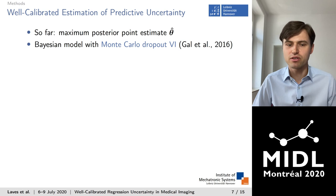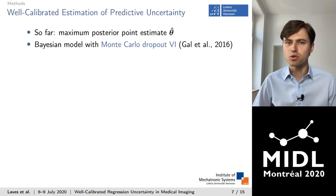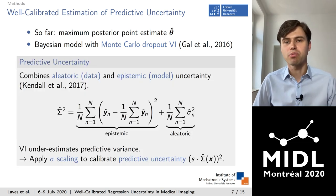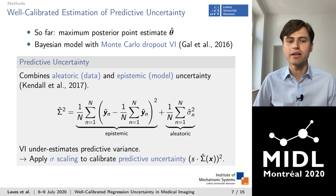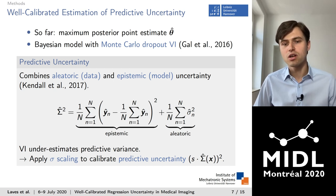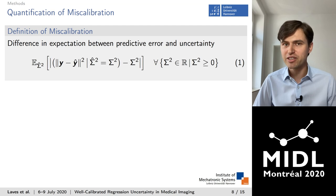So far we have assumed a maximum posterior point estimate for the parameters θ, which does not consider the epistemic uncertainty. We therefore extend the neural net into a fully Bayesian model under the variational inference framework with Monte Carlo dropout. In Monte Carlo dropout, the model is trained with dropout and dropout is applied at test time by performing multiple stochastic forward passes to sample from the approximate Bayesian posterior. We use Monte Carlo integration to approximate the predictive variance as our measure of uncertainty. However, variational approximations underestimate the predictive variance, resulting in miscalibrated uncertainty, and therefore we apply sigma scaling to recalibrate the predictive uncertainty.